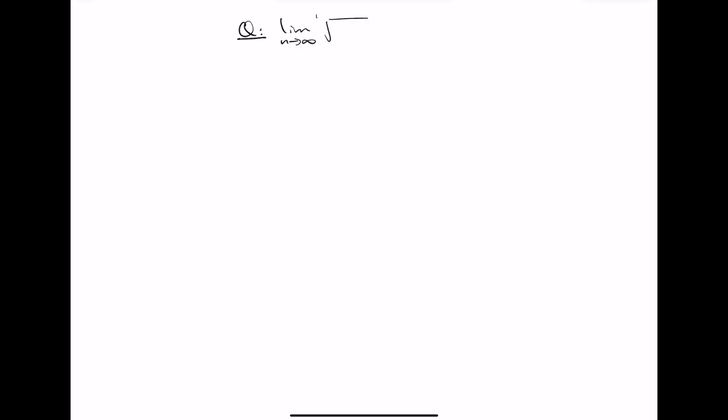What is the limit as n goes to infinity of the nth root of n factorial? Before we begin, it helps to look at a couple of examples.